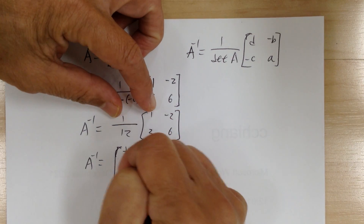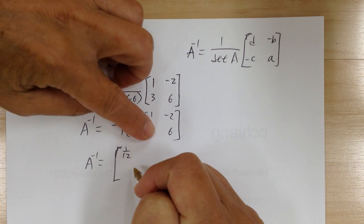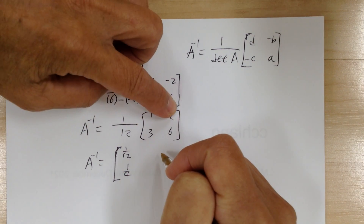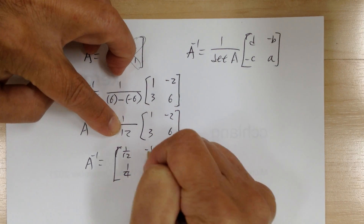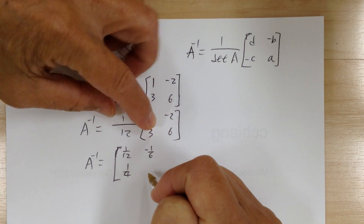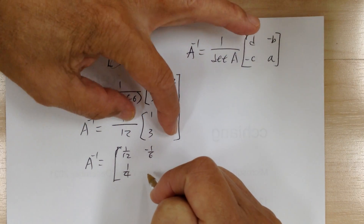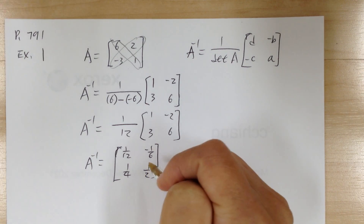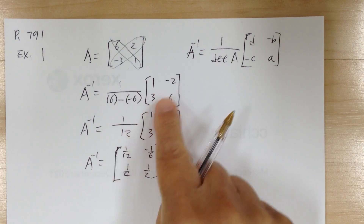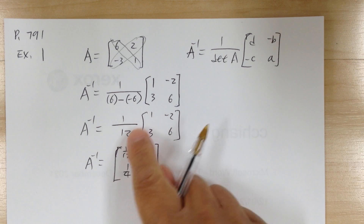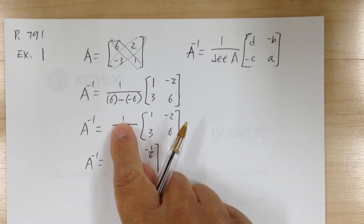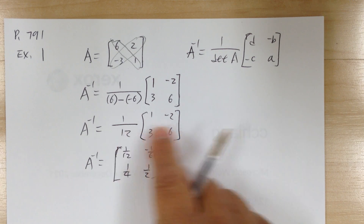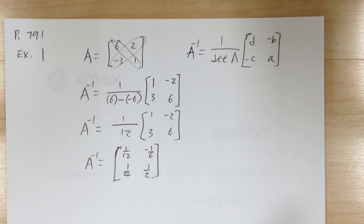So the inverse of A equals one over 12 times the matrix [1, 3, negative 2, 6]. Distributing: 1/12, 3/12 = 1/4, negative 2/12 = negative 1/6, and 6/12 = 1/2. That's how you find the inverse of a 2×2 matrix.